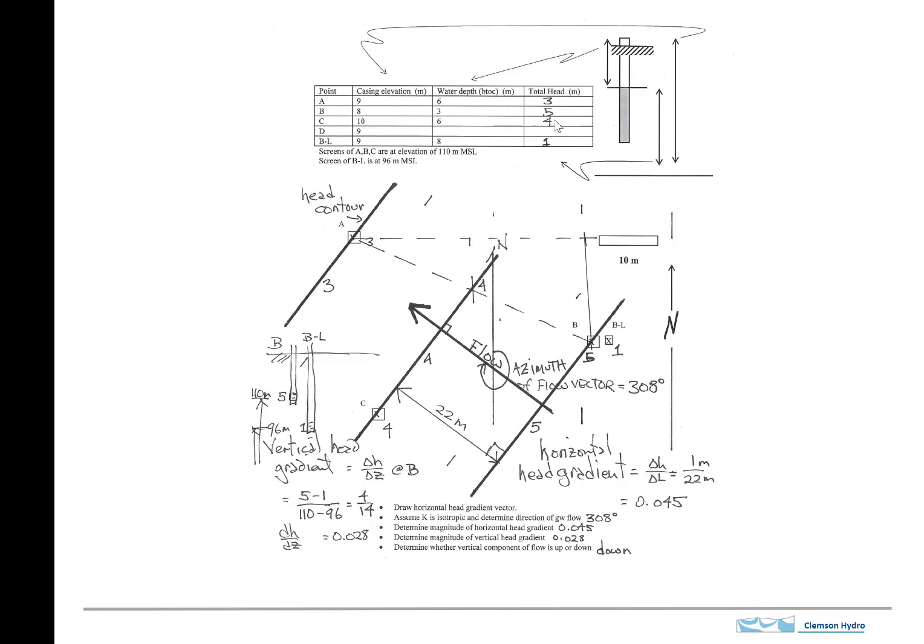And you would measure that with a water level meter. And then what we're interested in is the total head, which is the elevation to the water surface above the datum. So that's this distance. And we obtain that by subtraction.